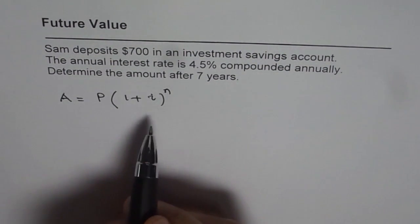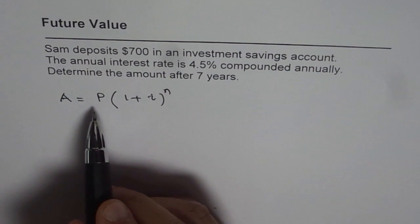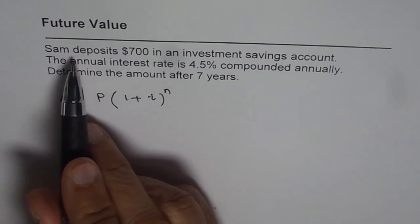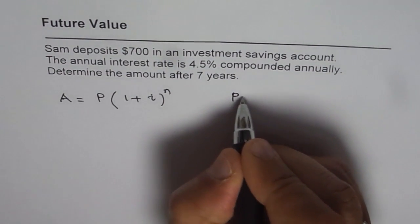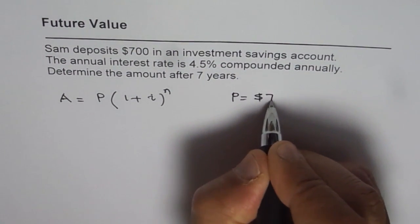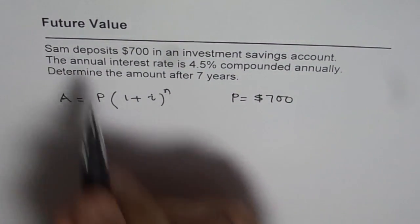Now in this formula P is the principal amount which is in this case $700. So we know P is equal to $700, the principal amount deposited by Sam.